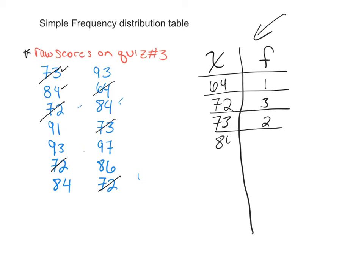Then it jumps to the B range, so 84. I saw a couple of those. So one, two, oh, three. Three people had an 84. And then 86, looks like just one had an 86.